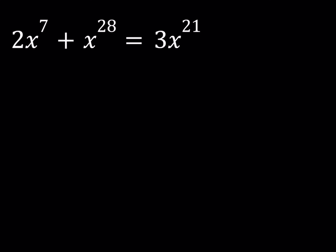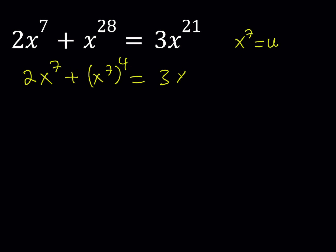First of all, notice that all the powers here are multiples of 7. So what I can do here is a basic substitution where I can replace x to the 7th with u. If I arrange my polynomial that way — writing it like 2x to the 7th plus x to the 7th to the 4th equals x to the 7th to the 3rd power — then replacing x to the 7th with u gives me 2u plus u to the 4th equals 3u cubed.